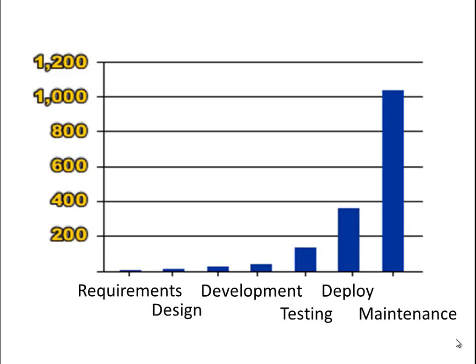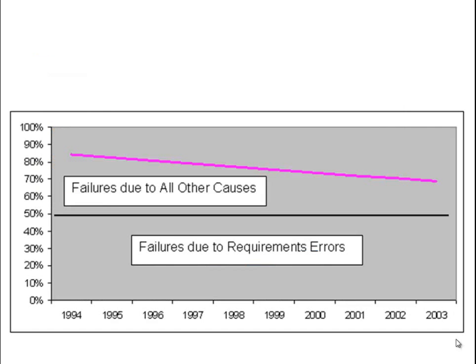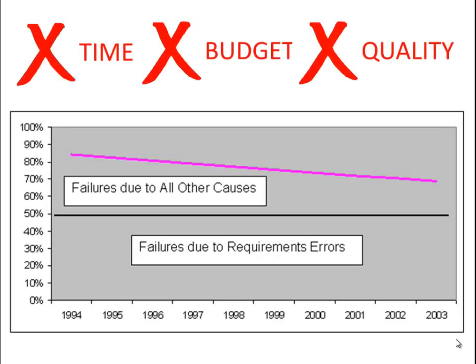But how big an issue is this? How many projects globally are affected by not getting the correct requirements? Studies have shown that about 70% of all software projects fail to be delivered on time, within budget, or to the quality that the customer expected.